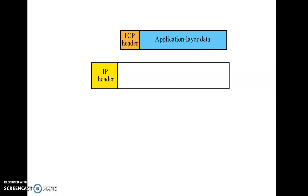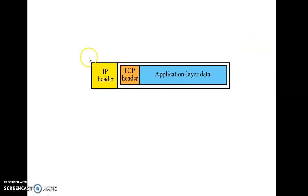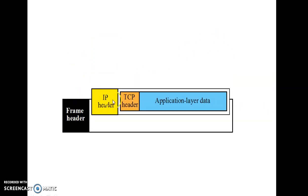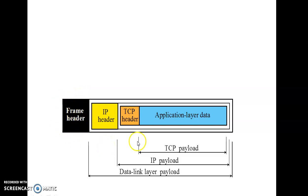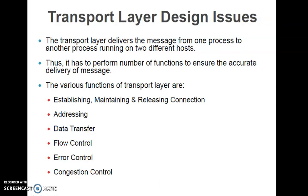This segment is passed to the network layer, where it is appended with an IP header — another encapsulation step. The whole data now forms a packet. This packet goes to the data link layer, where a frame header is appended. We can refer to the TCP payload, IP payload, and data link layer payload at their respective levels.